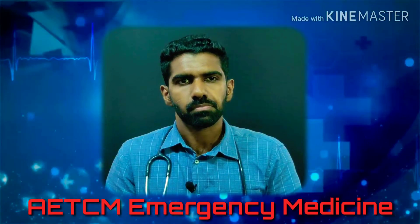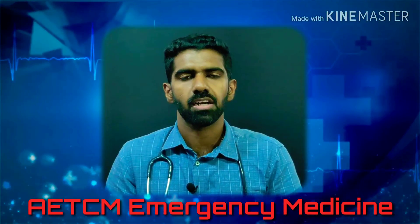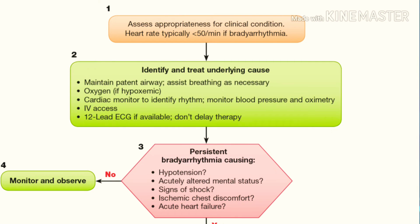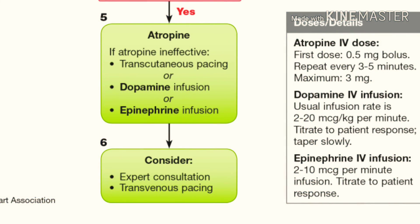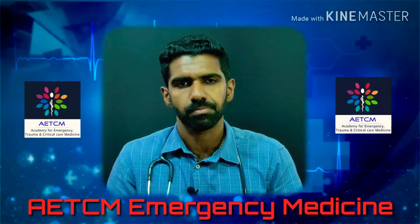To summarize: identify bradycardia, maintain a patent airway, assess breathing with supplemental oxygen, monitor BP and heart rate, and take a focused history and physical examination. Determine if the bradycardia is symptomatic or asymptomatic and assess for hypoperfusion. If hypoperfusion is present, administer atropine. If atropine is ineffective, proceed to transcutaneous pacing, and if that fails, plan for transvenous pacing.